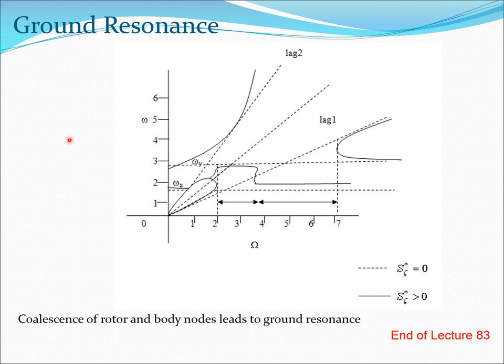Mathematically this comes from the four degree of freedom model, which gives us an eight-by-eight matrix whose determinant is set to zero to investigate stability. For any system x-dot equals Ax, the eigenvalues of A tell you about stability. If you have a more complex stability phenomenon, you need to formulate it as an equation system x-dot equals Ax. If A has constant coefficients, find the eigenvalues. If you encounter any zero damping situation, you have an instability. I will stop this lecture here and see you in the next video.